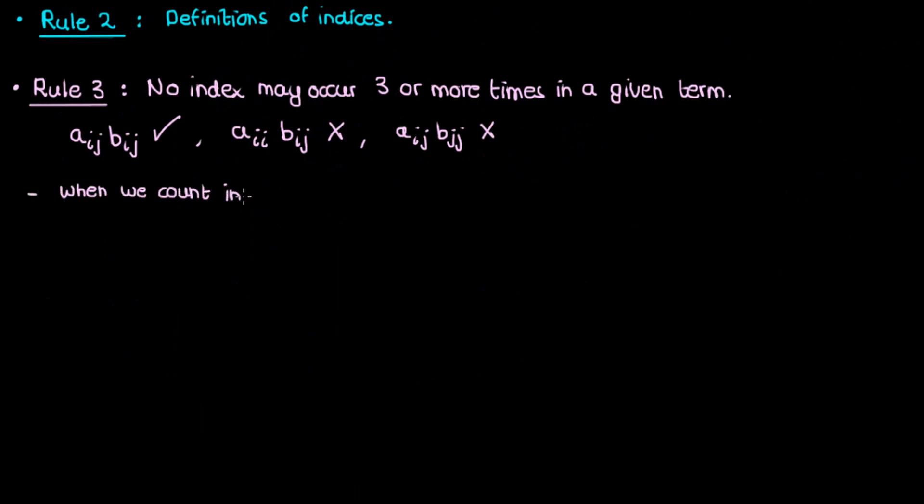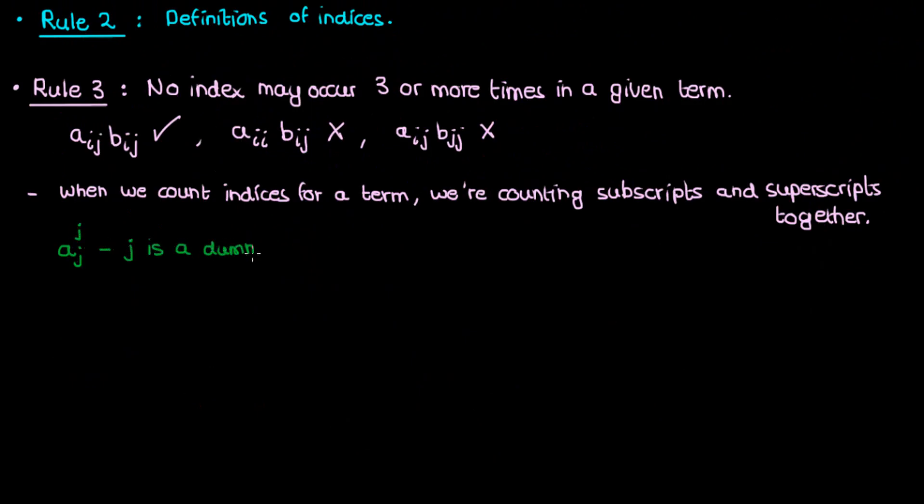Just a quick note that when we count indices in a single term, we're counting superscripts and subscripts together. We're not separating the counts. What I mean by that is if I have something like a sub j super j, then j is not a free index. j is a dummy index, because it occurs twice. Once in the subscript, plus once in the superscript. So we actually have to sum over j in this term. And if I have something like a super jj sub i, then i is the free index, and j is the dummy index. Again, we're counting superscripts and subscripts together.